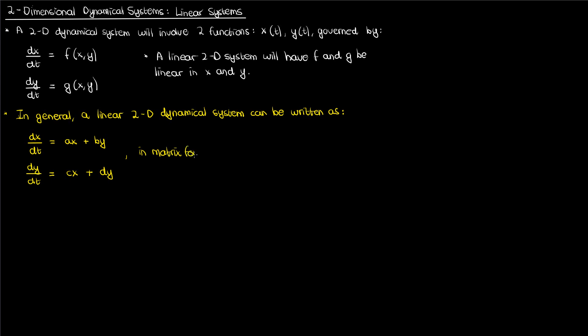If you wanted to write this in matrix form you could write this as follows with a column vector denoting the derivatives on the left, a column vector on the right denoting the functions x and y, and a coefficient matrix with the elements a, b, c, and d. I can label the derivative vector as x dot with an arrow over it, the coefficient matrix as capital A, and the function vector as x with an arrow over it. If I do that I end up with the following matrix equation for my linear dynamical system. I'll call this equation 1.